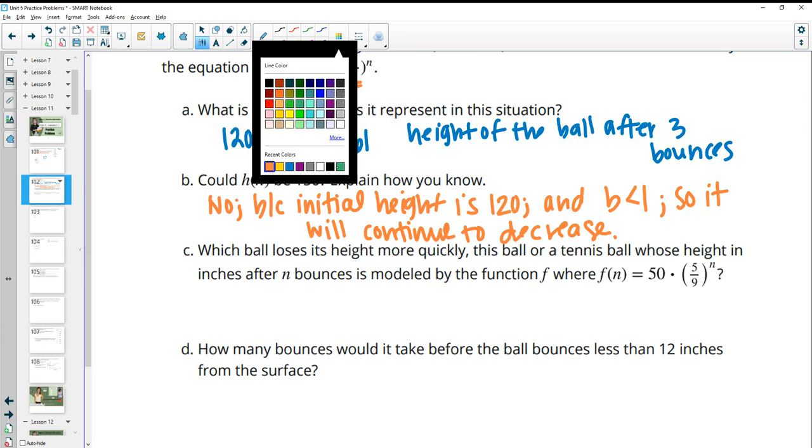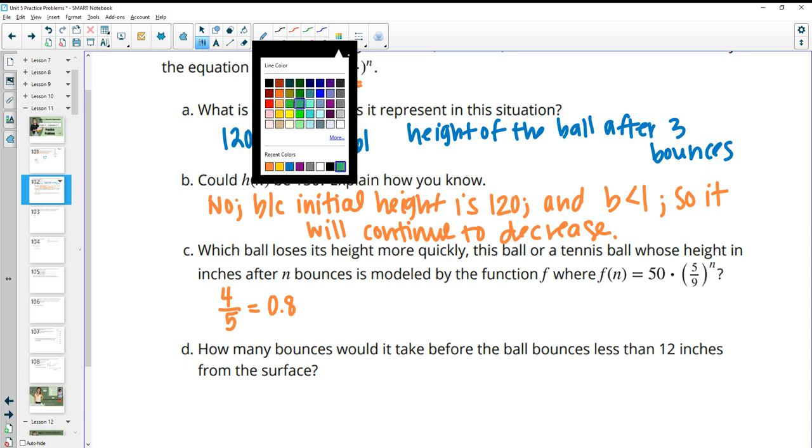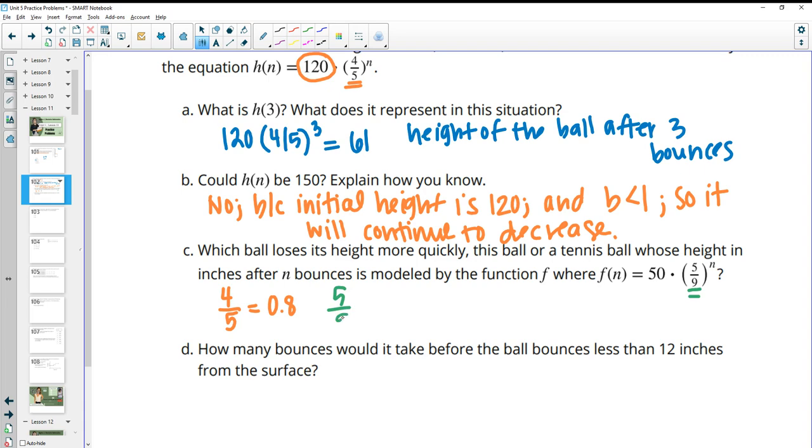Which ball loses its height more quickly? This ball or a tennis ball whose height in inches after N bounces is modeled by this function? So we have the first one, which has a growth factor or a decay factor of 0.8. So this one is keeping 80% of its height. And then we have this one whose growth factor is 5/9. And that one, if you do 5 divided by 9, is giving you 0.55. So that one is keeping about 55 or 56% of its height.